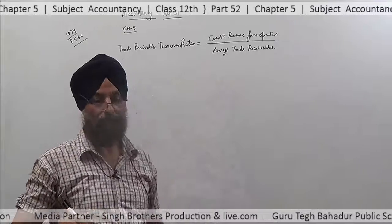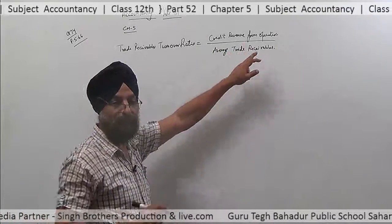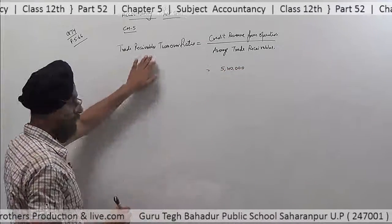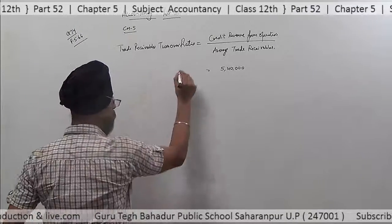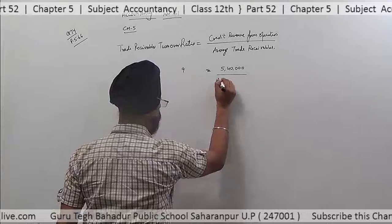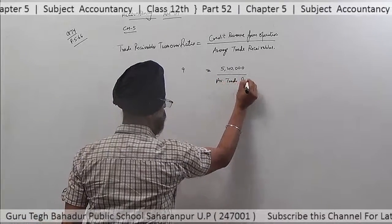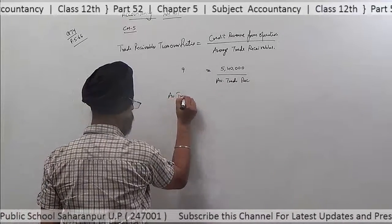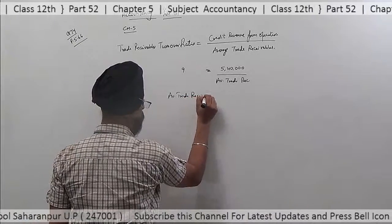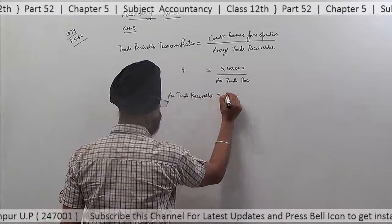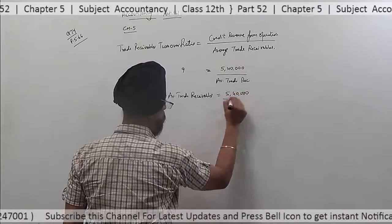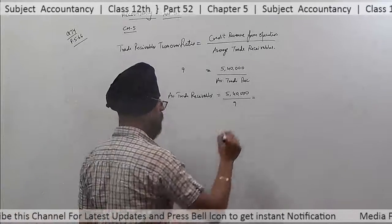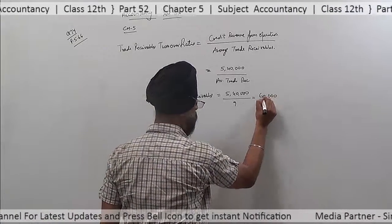Credit revenue from operations is given as 5,40,000 in the question, and trade receivables turnover ratio is 9 times. So, average trade receivables equals 5,40,000 divided by 9, which gives us rupees 60,000.